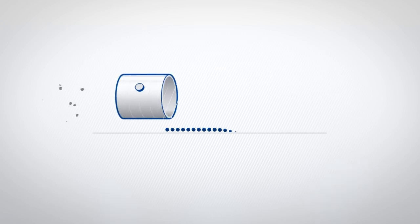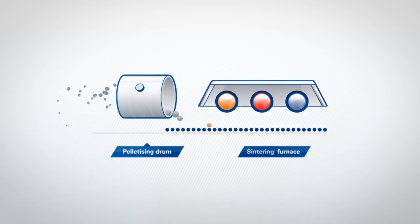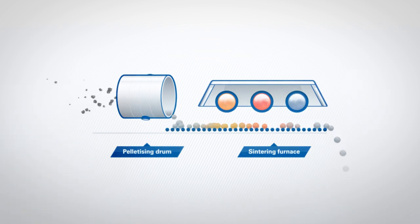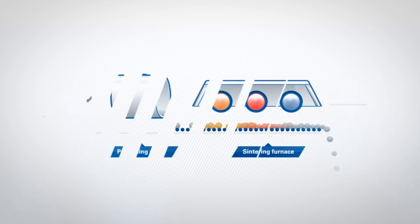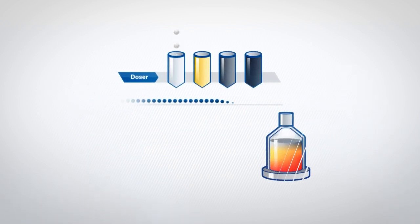Fine concentrate arrives from the Kemi Mine and is mixed with bentonite and coke dust and fed into the pelletizing drum. Then pellets are fed into the sintering furnace. After sintering, the chromite pellets are ready for use.